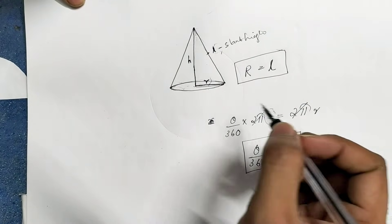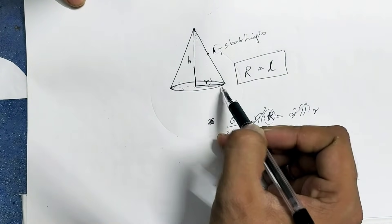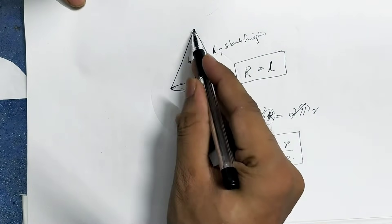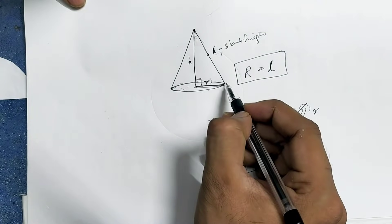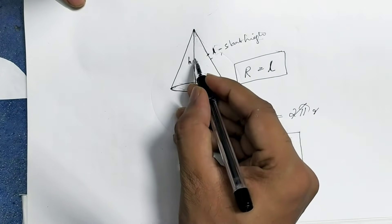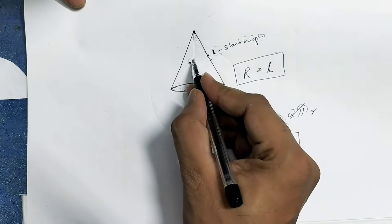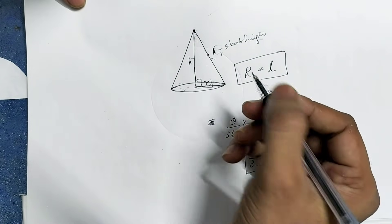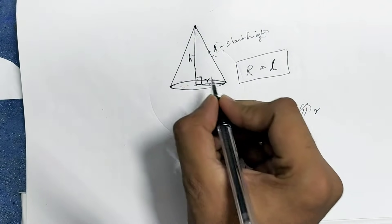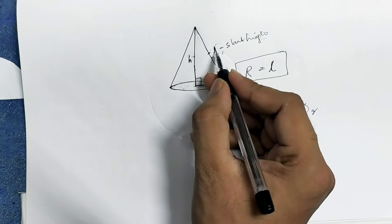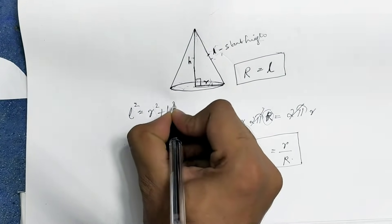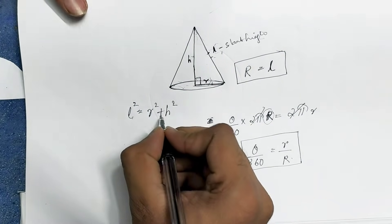We are going to study the cone. This is the cone. This is a right angle. The height is the altitude of the cone. Now, how to find the slant height: L squared equals R squared plus H squared. So L² = r² + h².